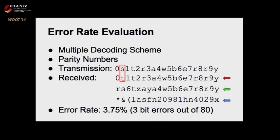My advisor forced me to put this slide in — I think it's too hard to explain, but he said it looked nice and technical. To evaluate our error rates, we used a multiple decoding scheme with a system of parity numbers. For our transmission, in this example we want to send the word 'strawberry' with 10 different letters. I interspersed the numbers 0 through 9 between each of the letters, and then when we receive and try to decode, we need to know which decoding attempt is most likely correct. Without the numbers we'd have no way of comparing them — some results were horrible and some were very good — so we choose the result with the most correct numbers, which in this case is the one with the red arrow. The green one is not as bad, and the blue one is terrible.